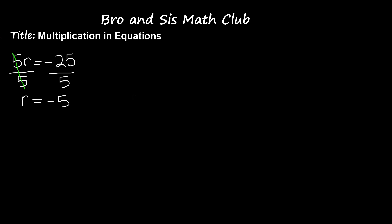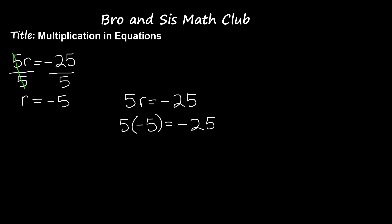Now let's check our answer. 5r is equal to negative 25. Let's rewrite this using our answer: 5 times negative 5 is equal to negative 25. So 5 times negative 5 is negative 25, and negative 25 is equal to negative 25. Our answer, r is equal to negative 5, is correct.